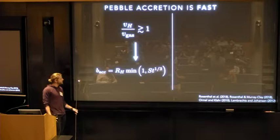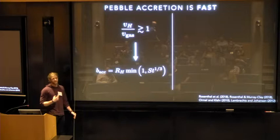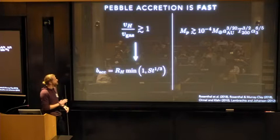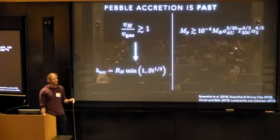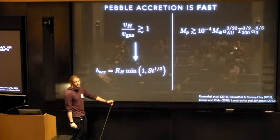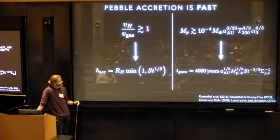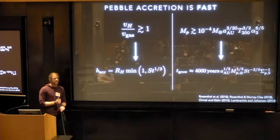There's a small reduction due to the size of the particle you're accreting falling off like Stokes number to the one-third. I think we're all familiar with Stokes number, but if we're not, it's just a dimensionless measure of a particle size in terms of its coupling to the gas. So in terms of some fiducial values, what this means is that for a planet mass of greater than 10 to the -4 Earth masses, here this is scaled to 1 AU and a temperature pre-factor of 200 Kelvin and an alpha value of 10 to the -3, what you end up with are growth rates that are about 4,000 years.